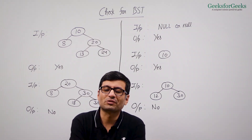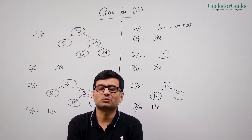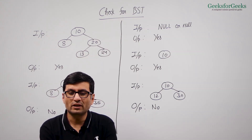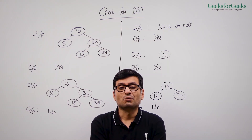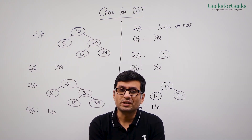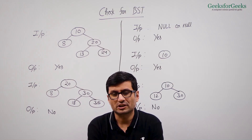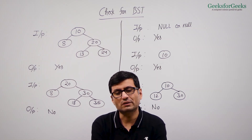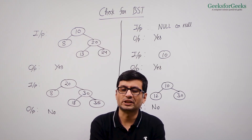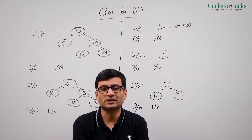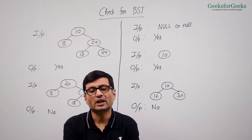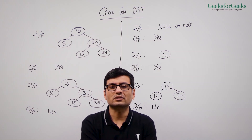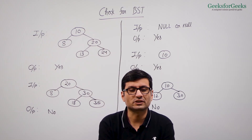In this video we are going to talk about this problem. We are given a binary tree which may not be a binary search tree. We need to return true if the given binary tree is a binary search tree, and return false if it is not.